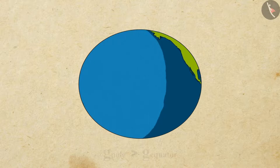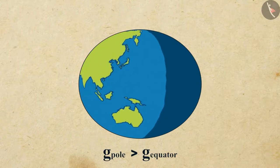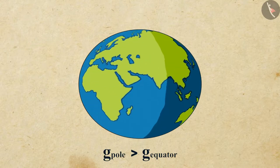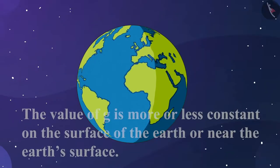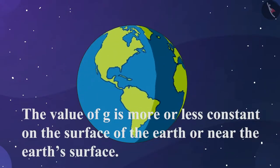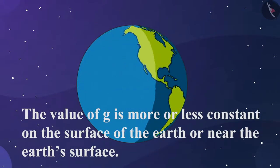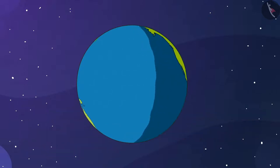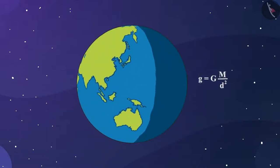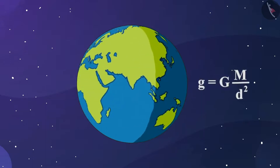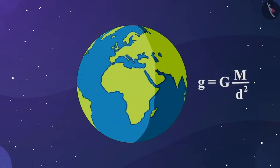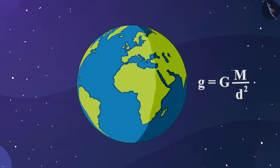The value of acceleration due to gravity, g, is more at poles than at the equator. The value of g is more or less constant on the surface of the Earth or near the Earth's surface. But for objects far from the Earth, we can calculate g using the formula g equals G multiplied by M upon d square.